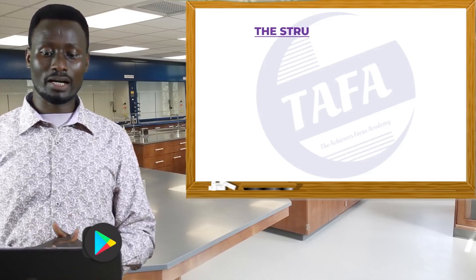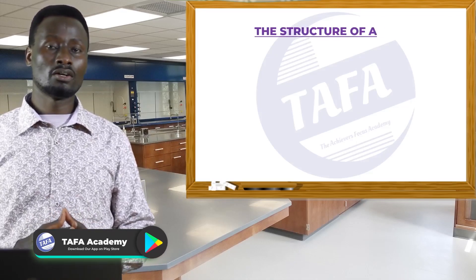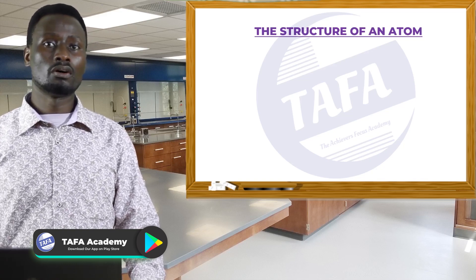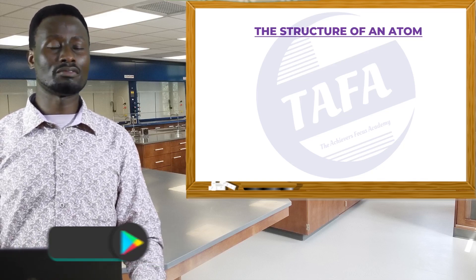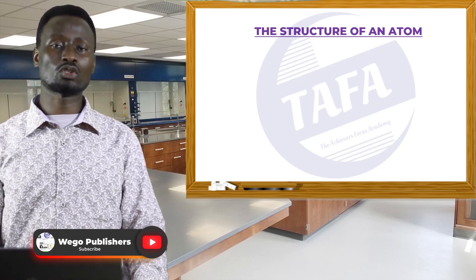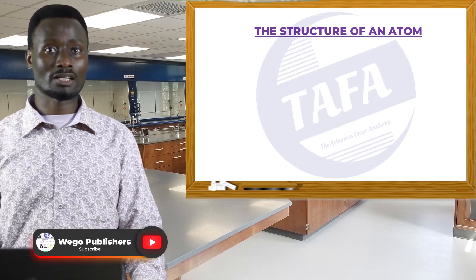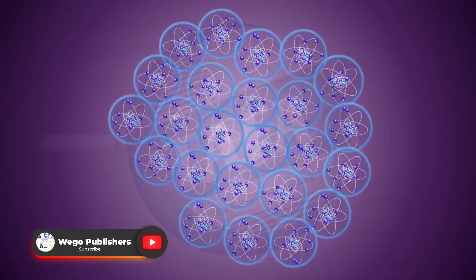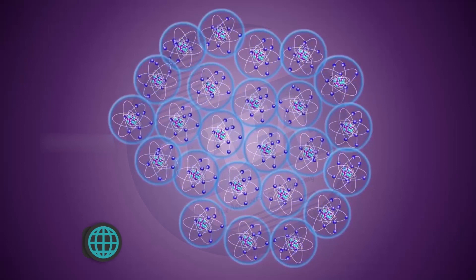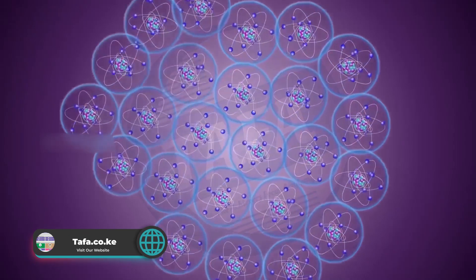We now want to look at the structure of an atom, and this is a review of what we have learned previously, especially in the topic of electrostatics. An atom consists of a tiny nucleus at the center